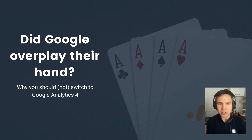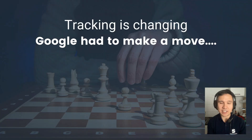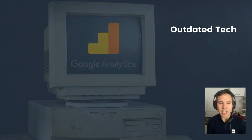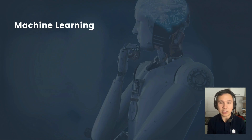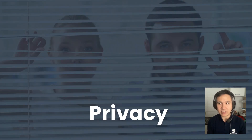Did Google overplay their hand with Google Analytics 4? Why should you switch or not switch to Google Analytics 4? Here are my thoughts. Google has acknowledged that the internet has changed, consumer behavior has changed, and the environment has changed. Google really had to make a move with their analytics tool — they had outdated tech, especially when it came to tracking different devices. They wanted something that goes with the times and helps users understand both website and app visitors. They also want to play to their strengths, having invested billions into machine learning and AI, and they want to port that over to their advertising business and Google Analytics.